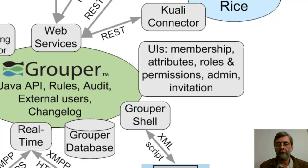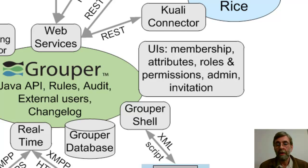There are a number of user interfaces as part of the toolkit. There's one whose purpose is to manage the membership of a single group, and at UChicago in particular, we use that widely for delegated administration, where a person — technical or not — can manage access of a particular group which has a particular meaning in their context. There's also a user interface for managing definition and assignment of attributes, and definition and assignment of roles and permissions.